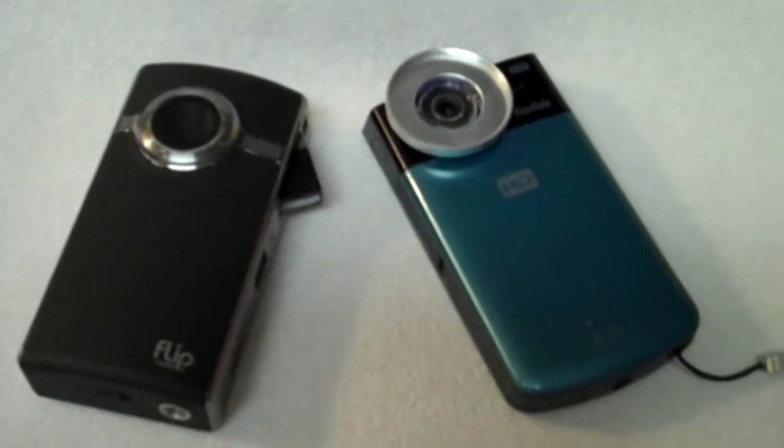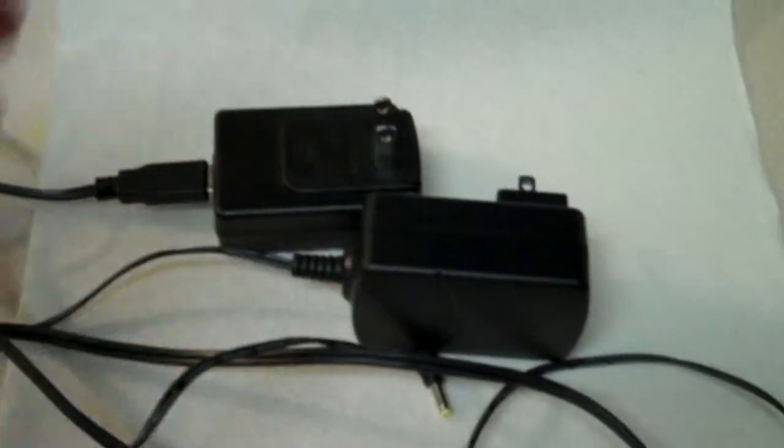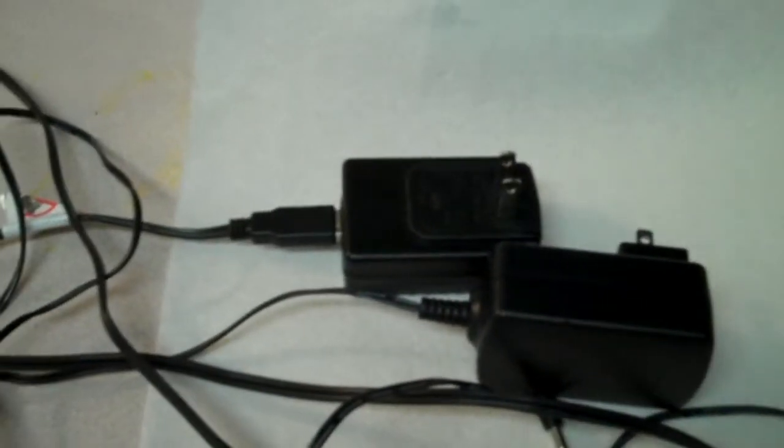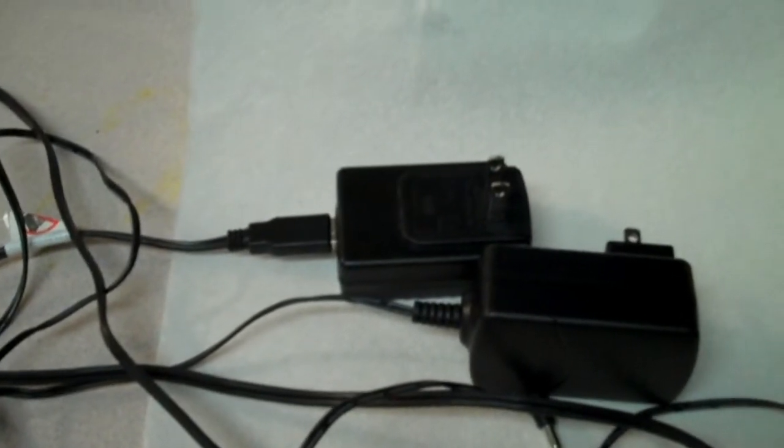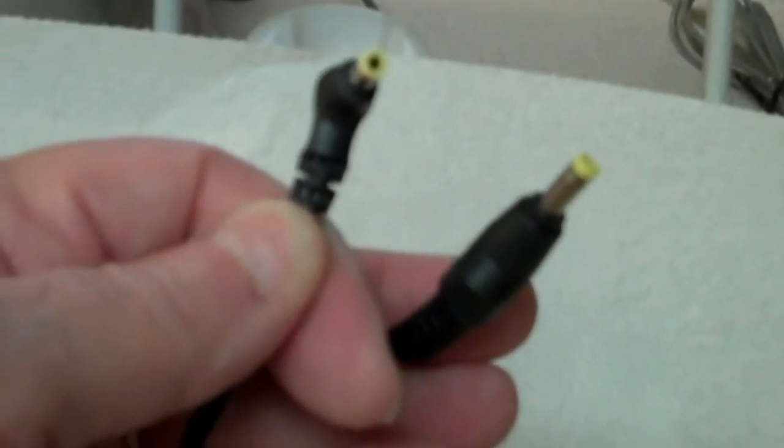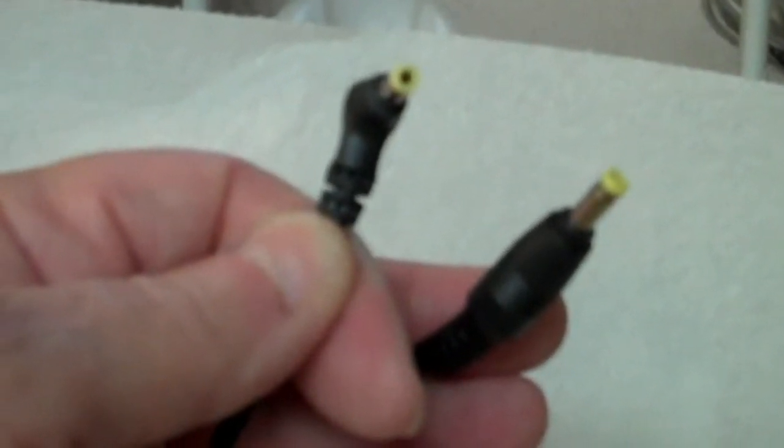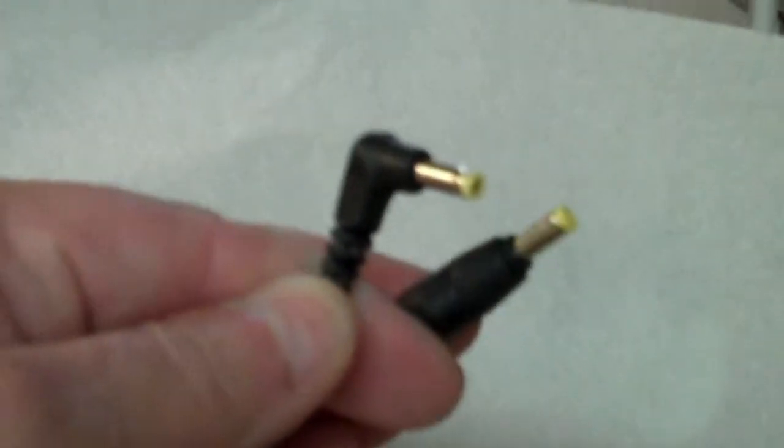Here we have the Flip Cam and the Kodak Zi8. Two wall warts - one of them goes to the Kodak Zi8, the other one goes to a Hare 7-inch TV. Both of them use the exact same connector for plug-in. These connectors are both the same diameter and the same color on the tip, yellow on the end, which makes them hard to tell them apart.